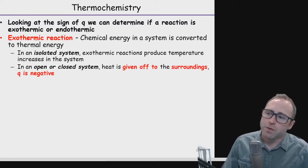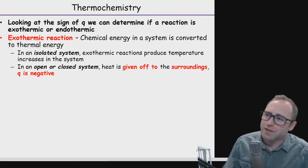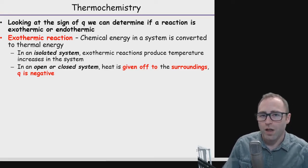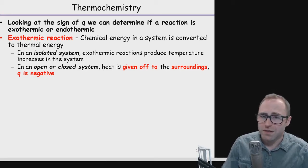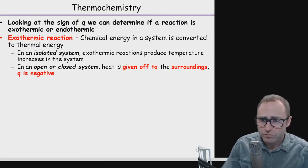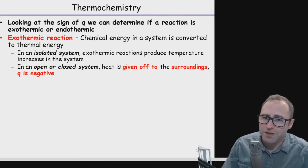We had isolated systems, open systems, and closed systems. For an isolated system, an exothermic reaction is going to produce a change in temperature within the system. In Chemistry 150, we don't do a lot of examples about isolated systems. We will talk about open or closed systems, where we say the heat is given off to our surroundings. If heat is going off into the surroundings from the system, Q is negative. So in an exothermic reaction in an open or closed system, Q is going to be negative.